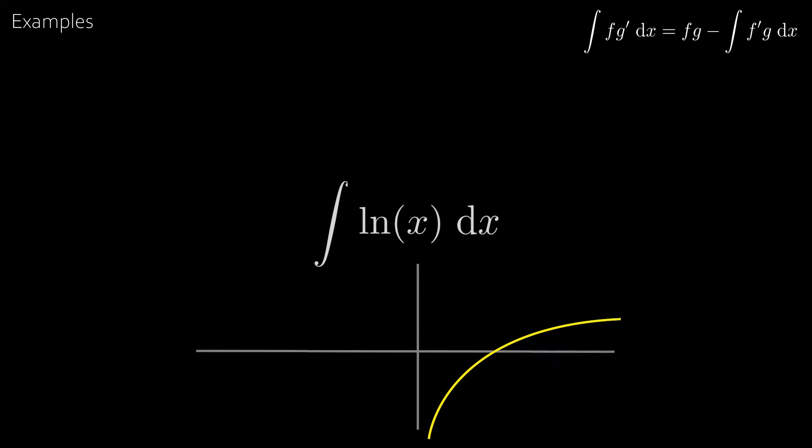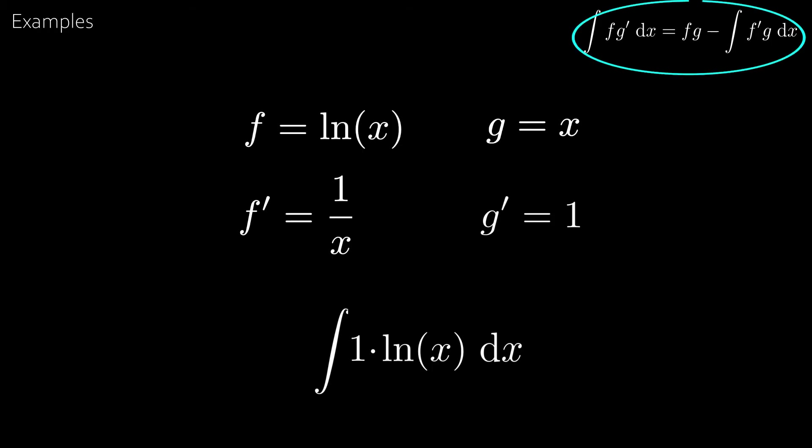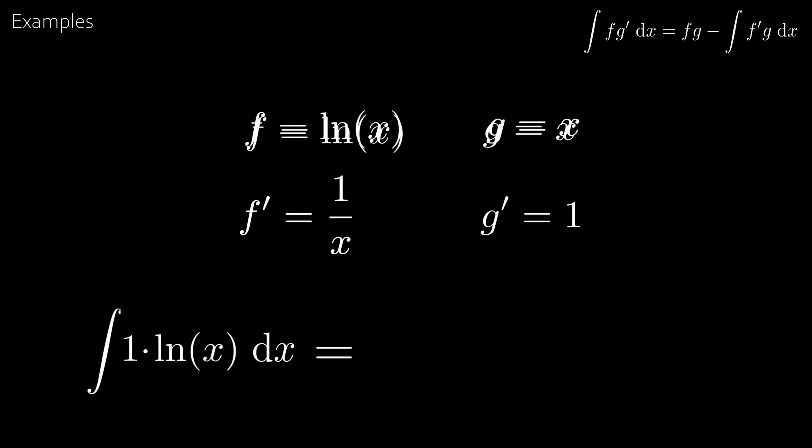Now what about the integral of the natural logarithm? Now there are two special integrals which use a clever trick and this is one of them. We write ln x as 1 times ln x and take f equal to ln x and g dash equal to 1 which gives f dash equal to 1 over x and g equal to x. And then by the formula we have that the integral of the natural logarithm is equal to x ln x minus the integral of 1 over x times x. And since the x's cancel out we get the integral of 1 dx which is just x plus c. Which gives us our answer to the integral.